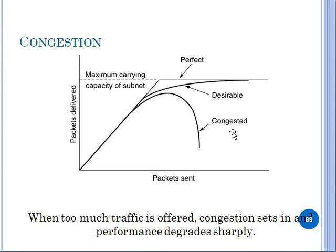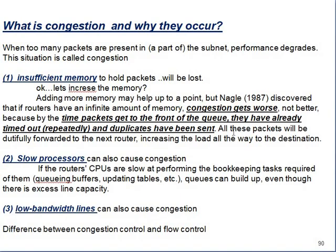When traffic is generated, it increases further due to insufficient memory. Congestion problems occur when the processor is slow, the bandwidth line is slow, or when the speed at which data is sent decreases. That is when congestion can be generated.